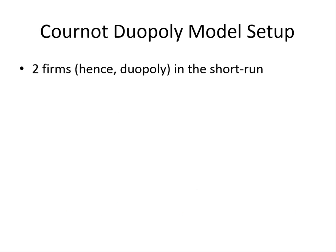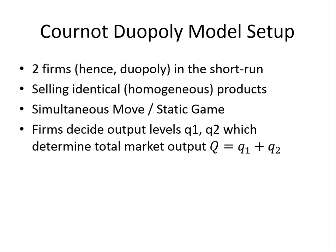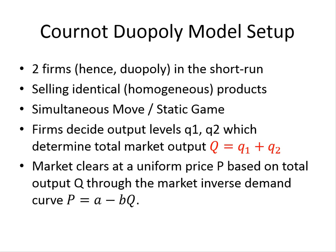The setup of our duopoly model is as follows: we're going to have two firms in the short run selling identical products and playing a simultaneous move game — we'll relax this assumption later to look at dynamic interaction. The firms decide as their strategies what quantities to produce, each choosing Q1 and Q2 simultaneously, which determines total market output Q. The market price then clears at a uniform price P through the inverse demand curve, since the products are identical — like two firms selling the same generic soda, and any rational consumer would only pay the market clearing price.